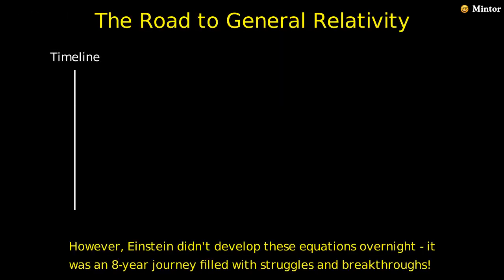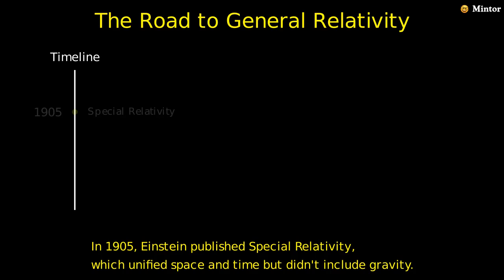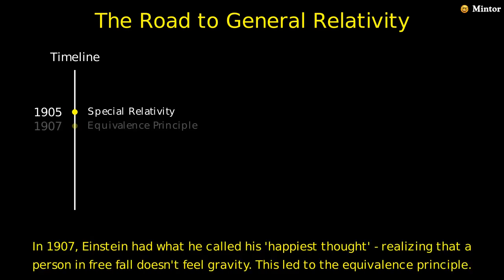However, Einstein didn't develop these equations overnight. It was an eight-year journey filled with struggles and breakthroughs. In 1905, Einstein published Special Relativity, which unified space and time but didn't include gravity. In 1907, Einstein had what he called his happiest thought, realizing that a person in freefall doesn't feel gravity. This led to the equivalence principle.